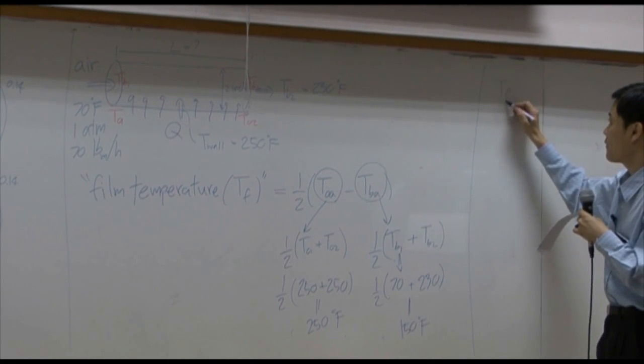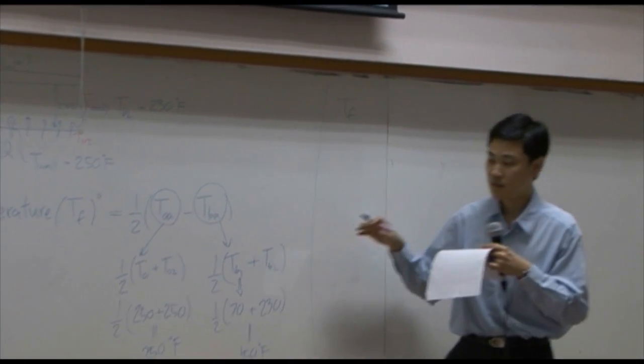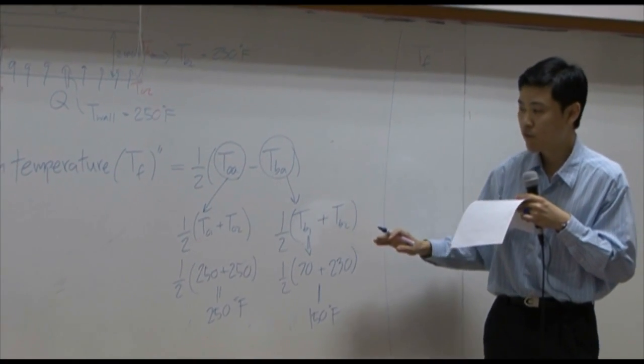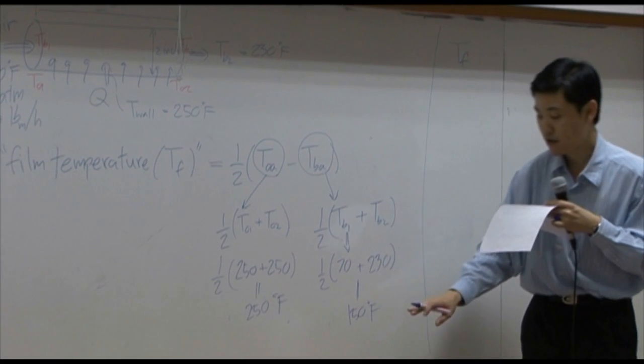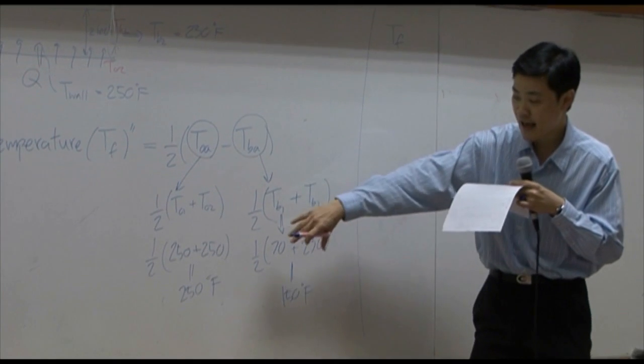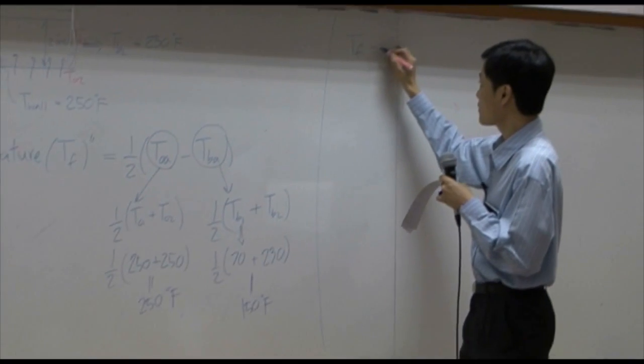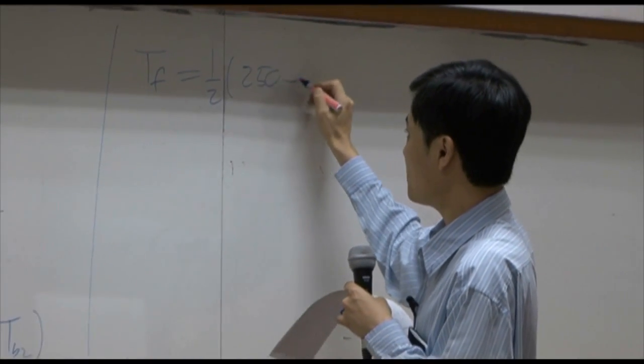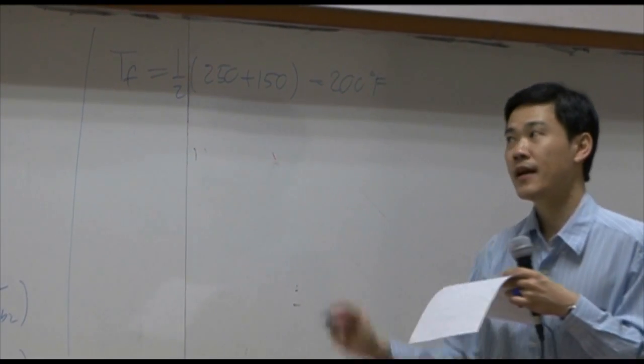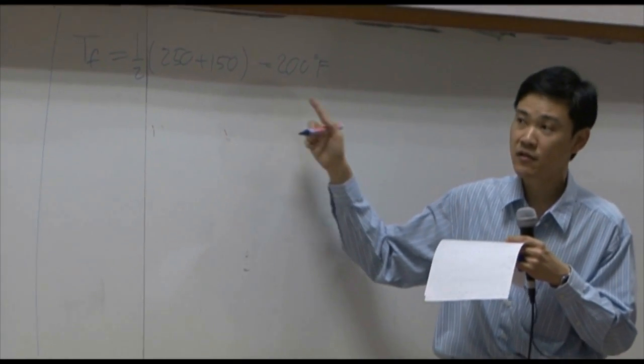So, therefore, film temperature is somewhere in between. Between wall temperature and bulk temperature. On average, wall temperature is 250. On average, bulk temperature is 150. So, in between, you just add it up, divide it by 2. So you get 250 plus 150. That's equal to 200 degree Fahrenheit.